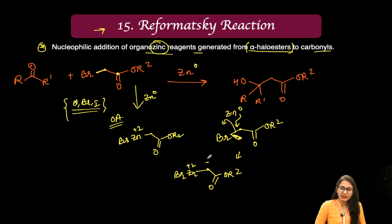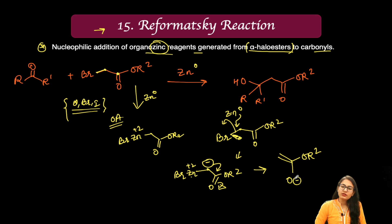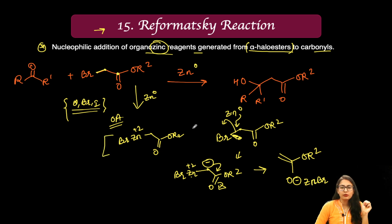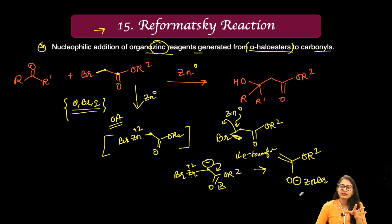A third representation shows the negative charge on the alpha carbon stabilized by zinc, forming the zinc enolate. You can also draw the enolate with the negative charge on oxygen, stabilized by zinc. All three representations are correct and equivalent — they all give you the ester enolate.